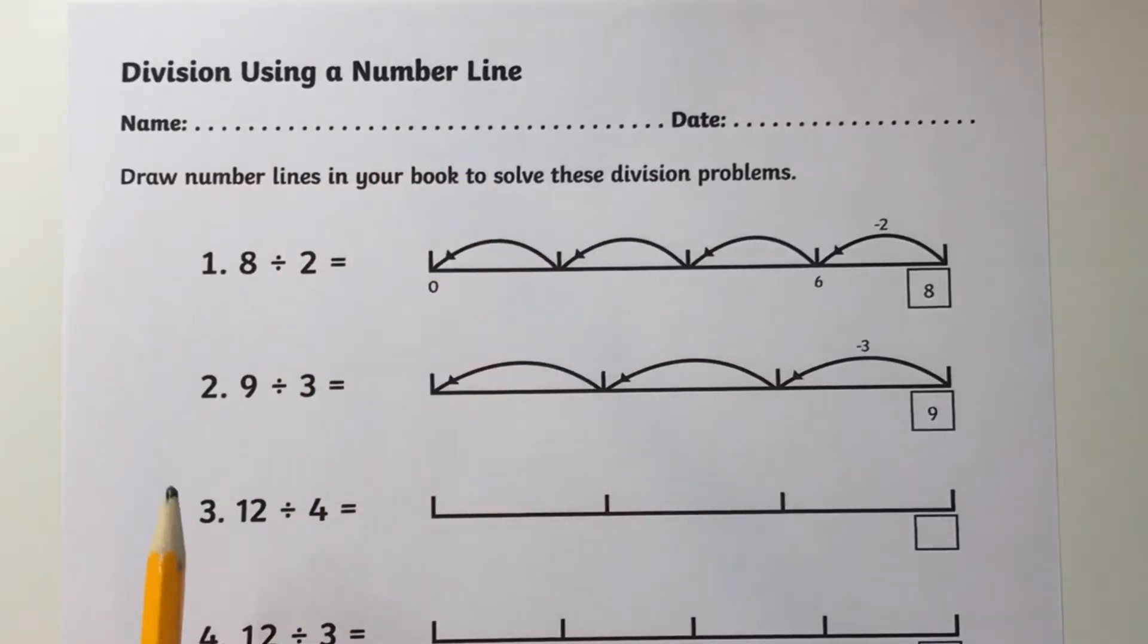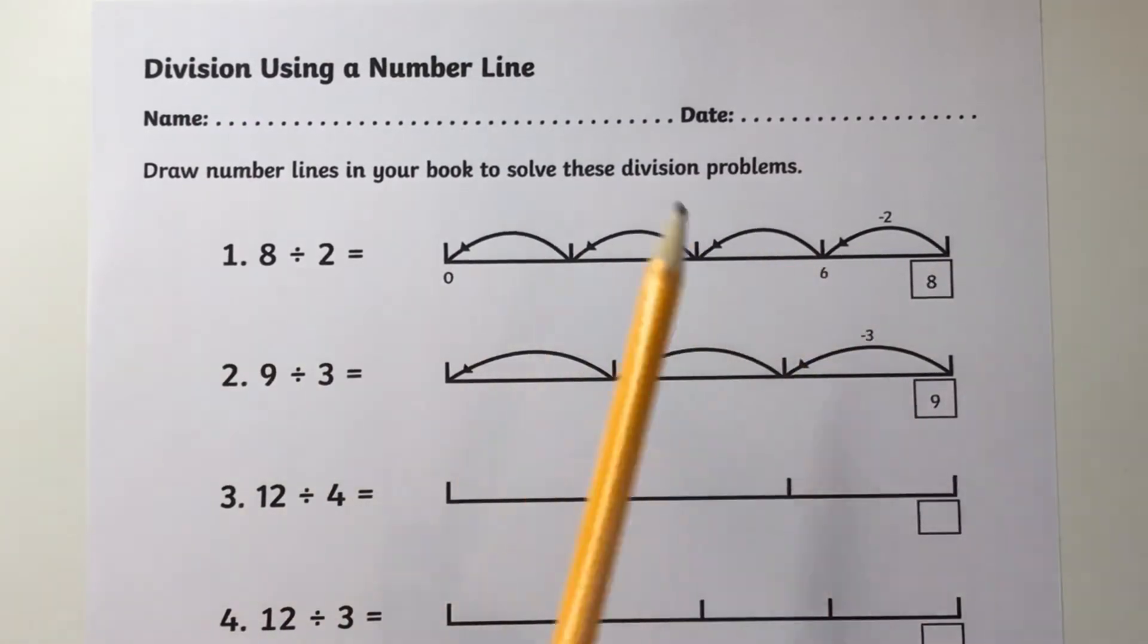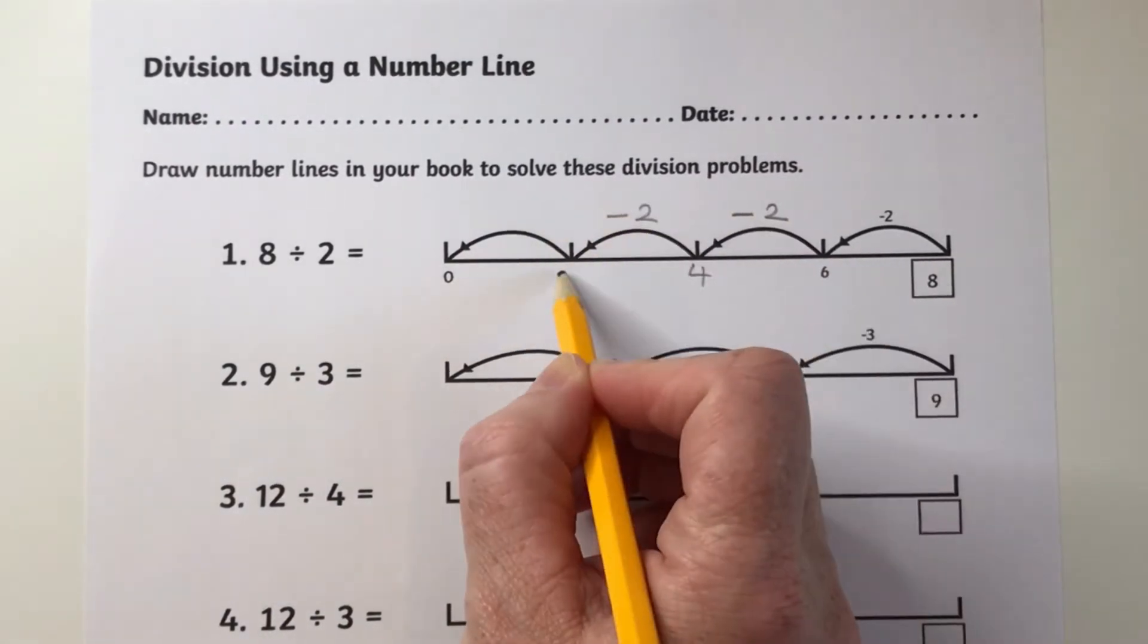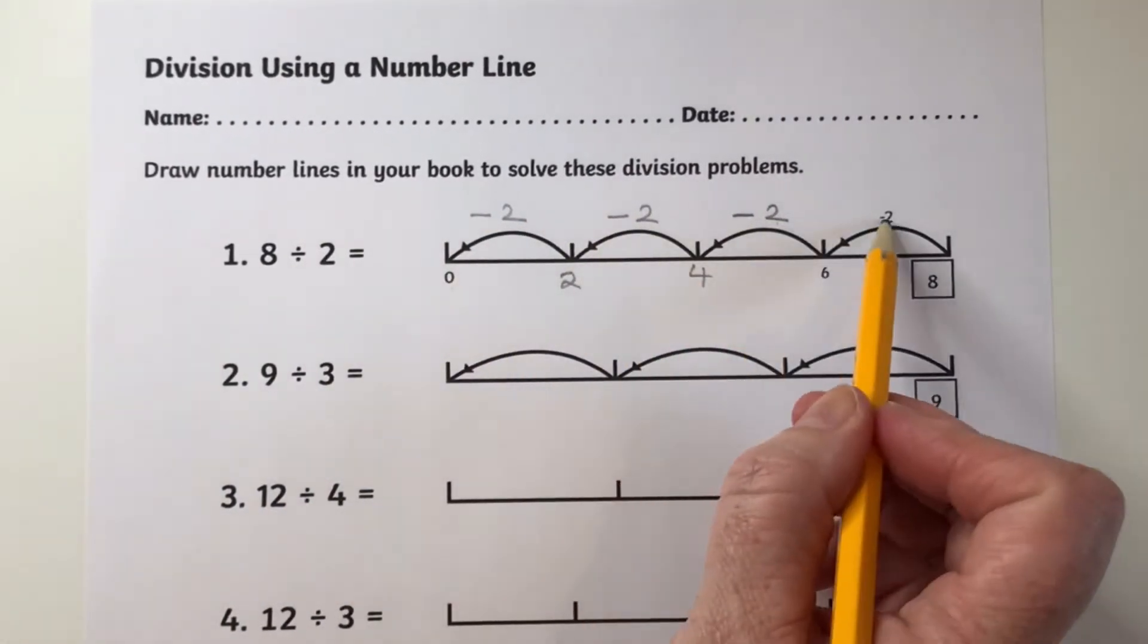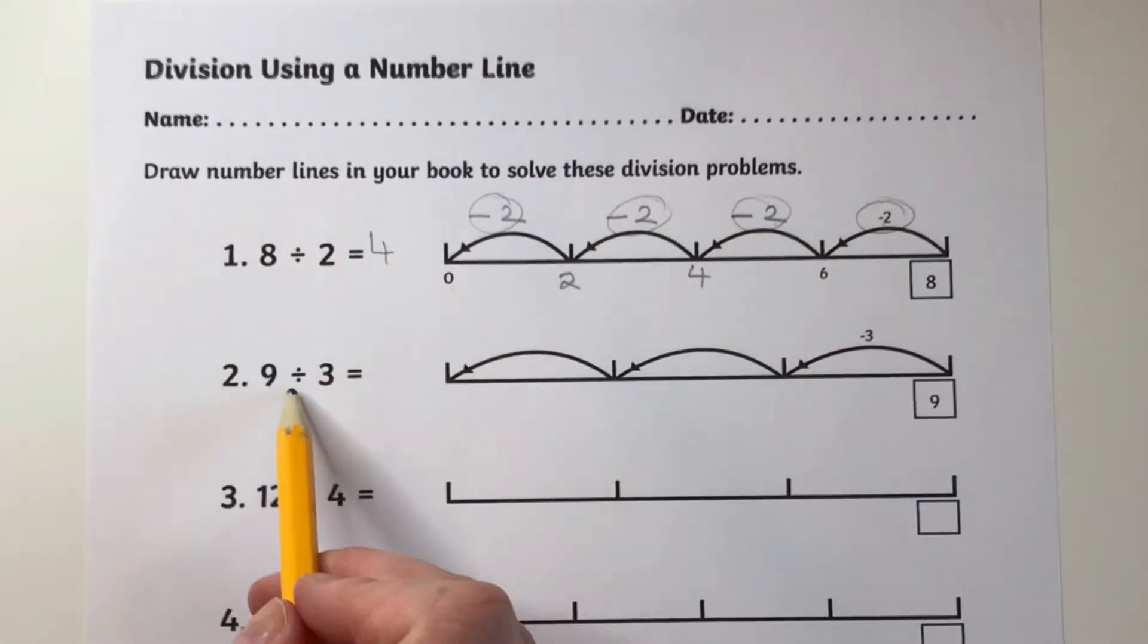You can see in this Twinkle resource how number lines are being used to solve division calculations by jumping back. When dividing by 2 you jump back in groups of 2, when dividing by 3 you jump back in groups of 3, and when dividing by 4 you jump back in groups of 4.